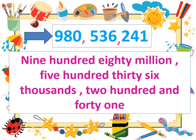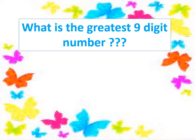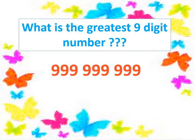980 million, five hundred thirty-six thousand, two hundred and forty-one. Now, what is the greatest nine-digit number? The greatest nine-digit number is nine hundred ninety-nine million, nine hundred ninety-nine thousand, nine hundred and ninety-nine.